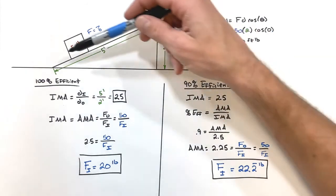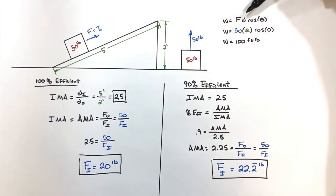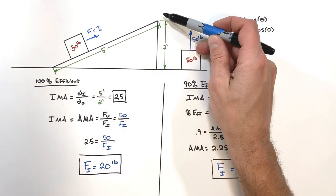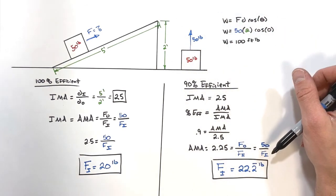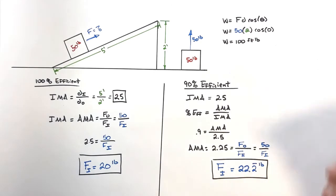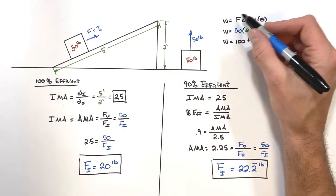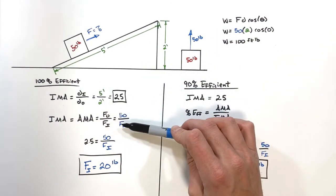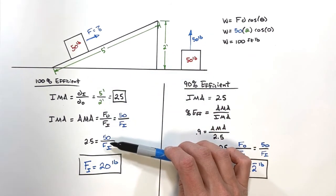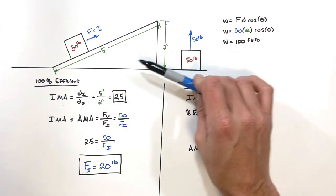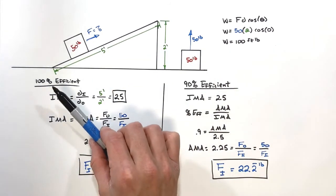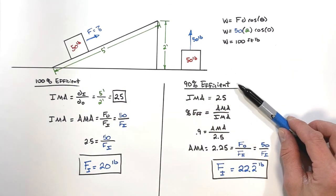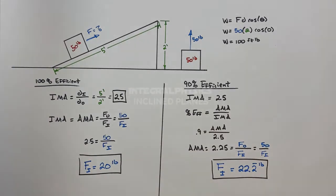We also end up doing more work — a force of 22.2 pounds acting over five feet is more than 100 foot-pounds. To summarize: we've seen how to apply work to an inclined plane, how to calculate both IMA and AMA, and how to use one known force to solve for the other — in both a 100% efficient situation and a case where the inclined plane is not entirely efficient.